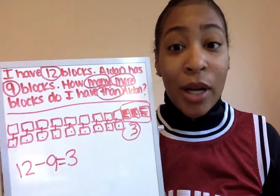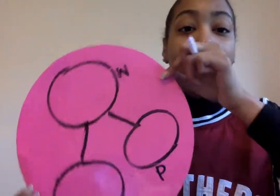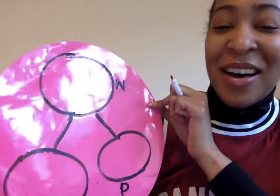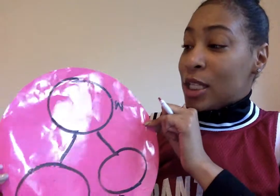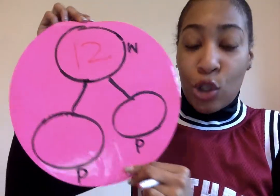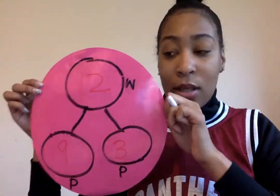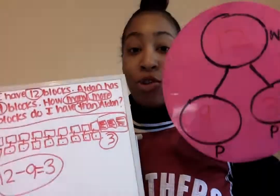And even though this problem is set up a little different, we can still do a number bond because we still have our number sentence that we're used to. So make your number bond and I'll be waiting for you guys. Hopefully you have your number bond ready. So what is the whole? If you said 12, that's correct. And then for the two parts, we have nine and three — 12 for our whole, nine for one part, and three for our other part. So even though our problem looked a little different, it was still subtraction and we were able to still put it into a number bond. Thank you guys for another CGI problem with Ms. Washington and I will see you guys tomorrow.